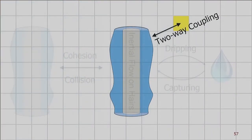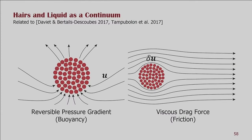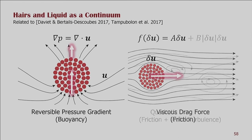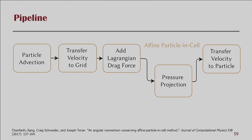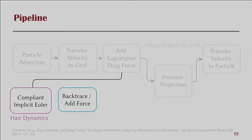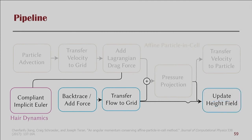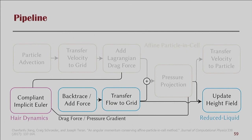Finally, we couple the reduced liquid with the uniform grid and liquid particles. Our two-way coupling method treats hair and liquid as a continuum, applying the buoyancy effect computed from the velocity divergence of the hair-liquid mixture, and viscous drag force computed from the relative velocity between liquid and hairs. Since the relative velocity can be large, we use a quadratic form to incorporate the effect of wake turbulence. We adopt Affine Particle-in-Cell (APIC) as our pipeline for bulk liquid simulation. We embed our new model into this APIC framework by solving hair dynamics, simulating the reduced liquid, transferring flow onto a grid, combining velocity with APIC particle velocity, updating the height field for capturing and dripping, and applying pressure gradient on hairs.